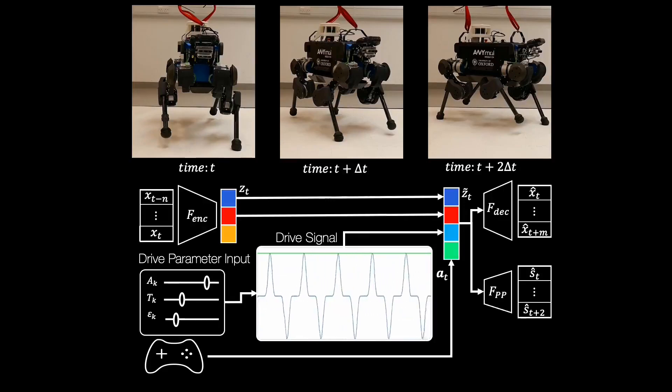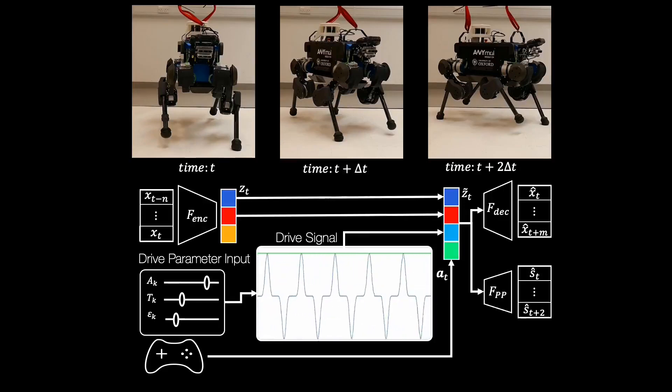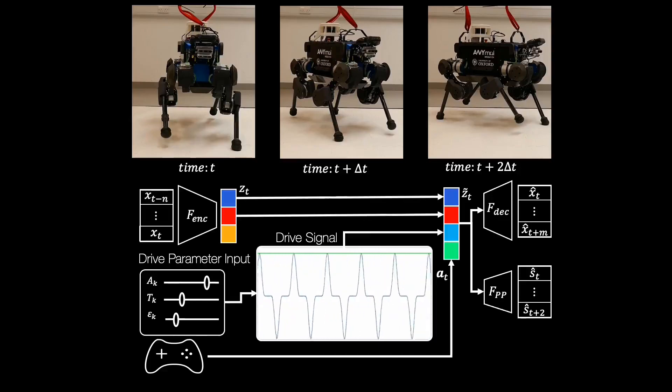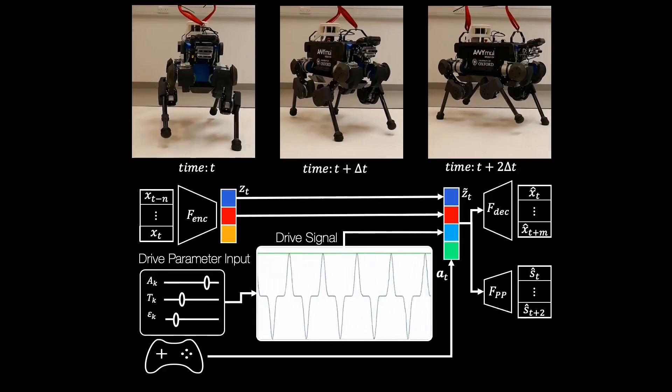The VAE is trained exclusively with synthetic data. And once trained, we inject a drive signal which overwrites a single latent variable to provide control over the robot's gait.